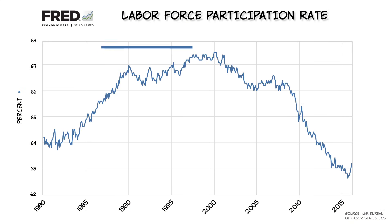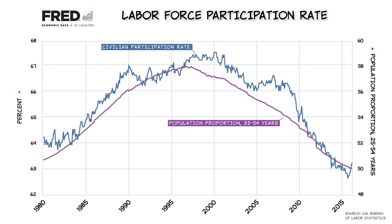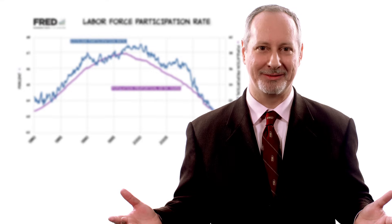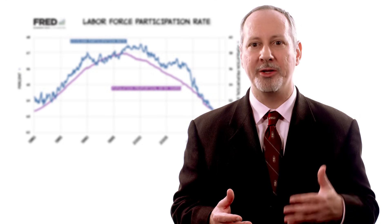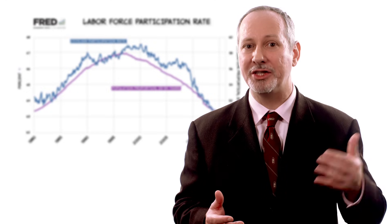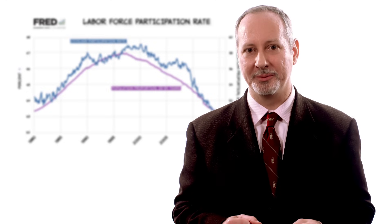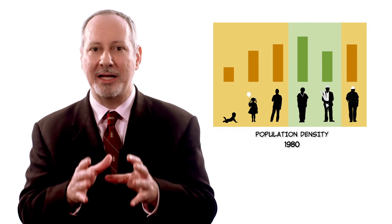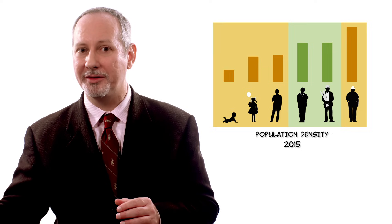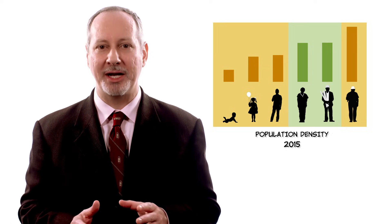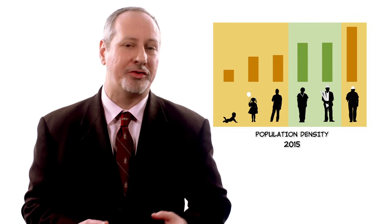Let's return to data from the St. Louis Federal Reserve and now graph the labor force participation rate since 1980 alongside the percentage of the adult population in their prime working years, ages 25 to 54. As you can see, these two measures move closely together — as one increases or decreases, so does the other. It means that as the percentage of people in the population who are most likely to work increases, so does the labor force participation rate. Since the share of the population most likely to work has been falling since around 1998, some of the decline in the labor force participation rate was baked in — it was going to happen regardless of the state of the economy.